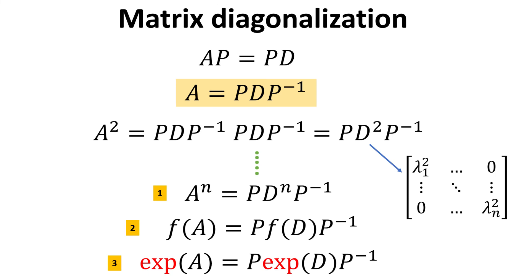We can also get an expression for the square of A. Multiplying it out, we see that A squared is simply the product of P with D squared and P inverse.